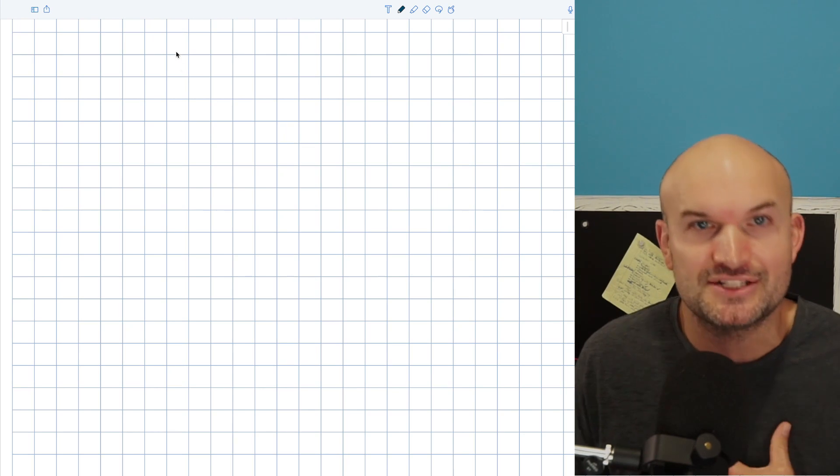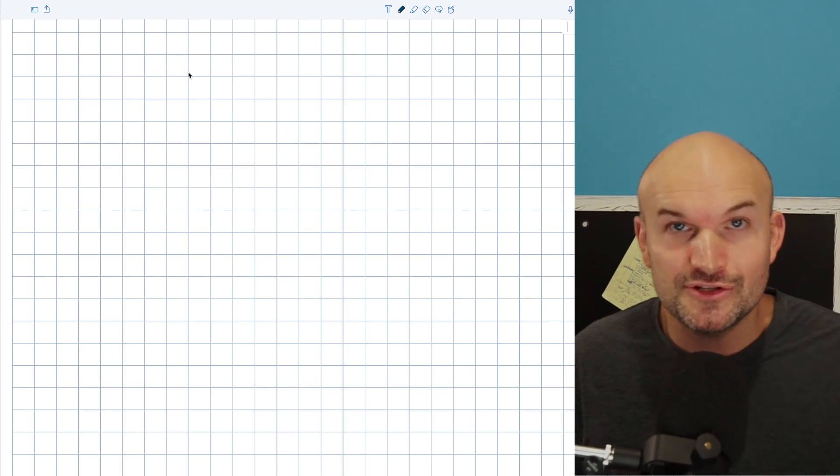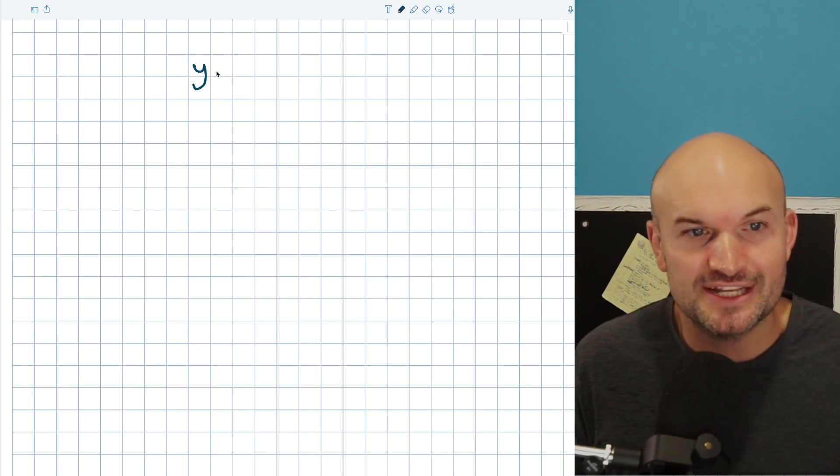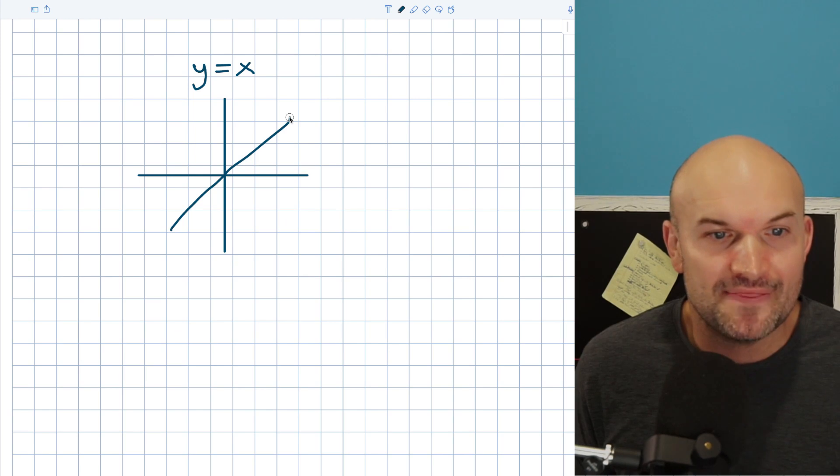So I think the best way that I like to understand and remember end behavior is really just by remembering two functions. The first function is going to be the linear function, y equals x. I think everybody can agree that they can remember y equals x. Now, this is also called the identity function, and that graph looks something like this.